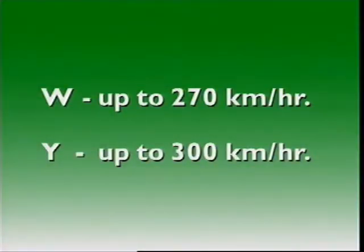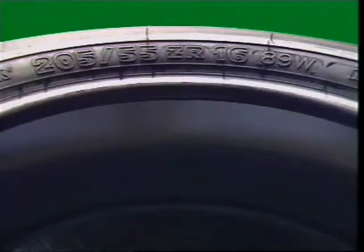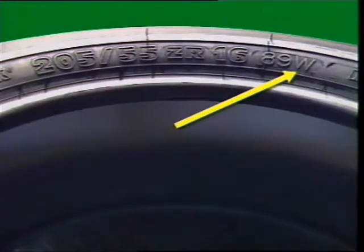Further development of high-speed tyres has expanded speed categories to include W and Y. For example, Z indicates a speed over 240 km/h, but the load and speed rating is taken as the maximum: 89 for a maximum load of 580 kilograms, and W for 270 km/h.